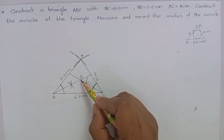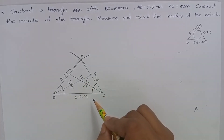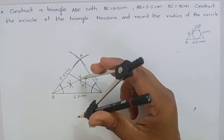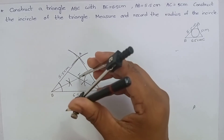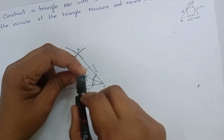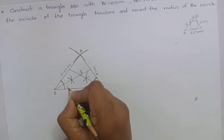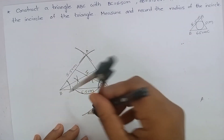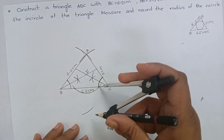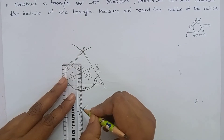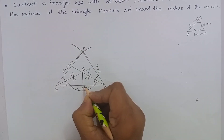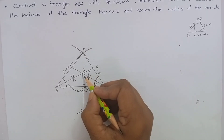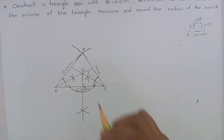Draw a perpendicular line from the point I on the side BC. Keep the compass on the point I and draw an arc on the side BC. Mark this point — this one and this one. Keep the compass at this point and cut an arc, then keep the compass at the other point and cut an arc. Join this line. Name this point as N. We have constructed IN perpendicular to BC from the point I.